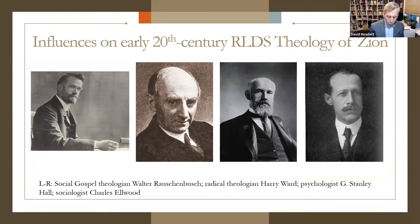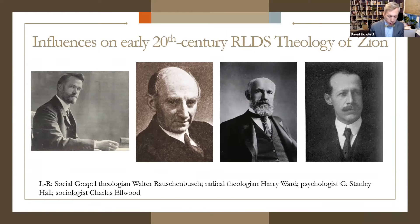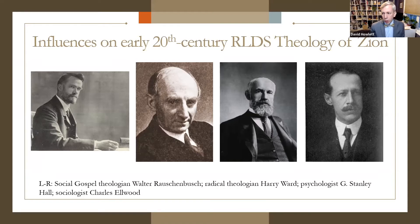The RLDS vision for collectivized utopian communities found expression in the symbol of Zion, which they equated with the kingdom of God on earth. Early 20th-century RLDS beliefs on Zion were a syncretic amalgamation of 19th-century Latter Day Saint scripture, Protestant social gospel ideals, and what we might call muscular Christianity. RLDS leaders liberally borrowed from thinkers as diverse as social gospel theologian Walter Rauschenbusch, pragmatist philosopher John Dewey, radical theologian Harry Ward, sociologist Charles Ellwood, Anglican Archbishop William Temple, and psychologist G. Stanley Hall — who was FM Smith's PhD advisor.